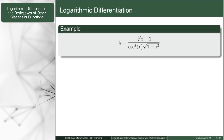Let's take, for example, y equal to the cube root of (x+1) over cosecant to the fifth x times the square root of (1 minus x squared). It is good to note that this expression has a lot of products, quotients, and powers — namely, a product in the denominator, a very big quotient, as well as powers. This is a good indicator that applying logarithmic differentiation will be very fruitful.